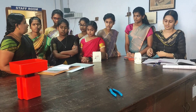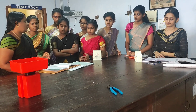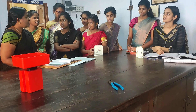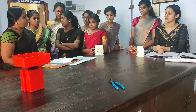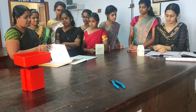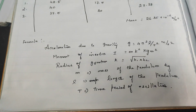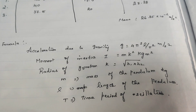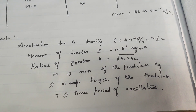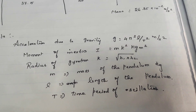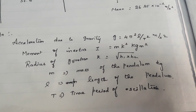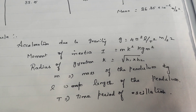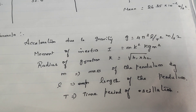The formula for acceleration due to gravity is g equal to 4 pi square l by t square. There are three kinds of formulas. Acceleration due to gravity is measured by the formula 4 pi square l by t square. The moment of inertia is measured by the formula I is equal to mk square.